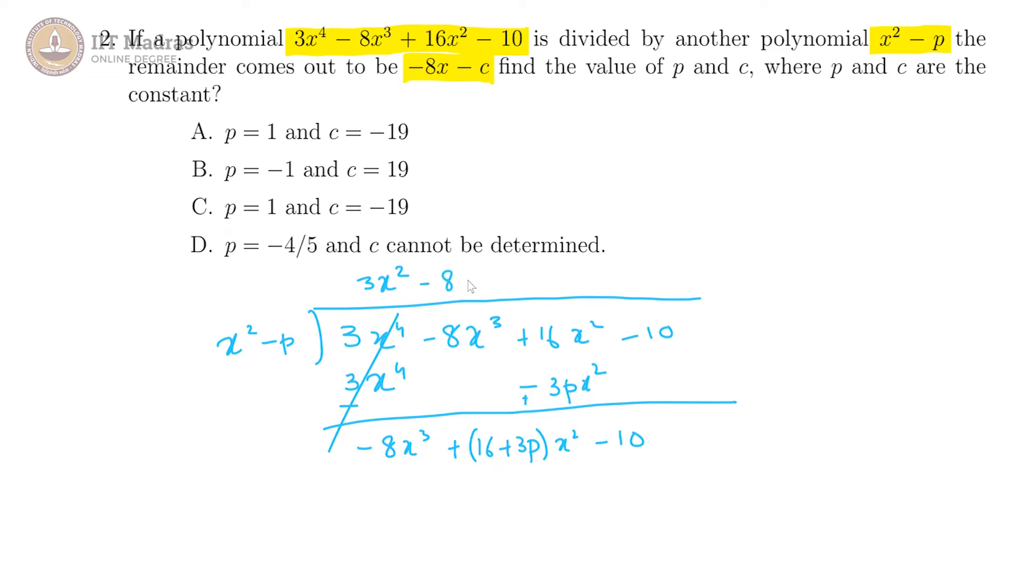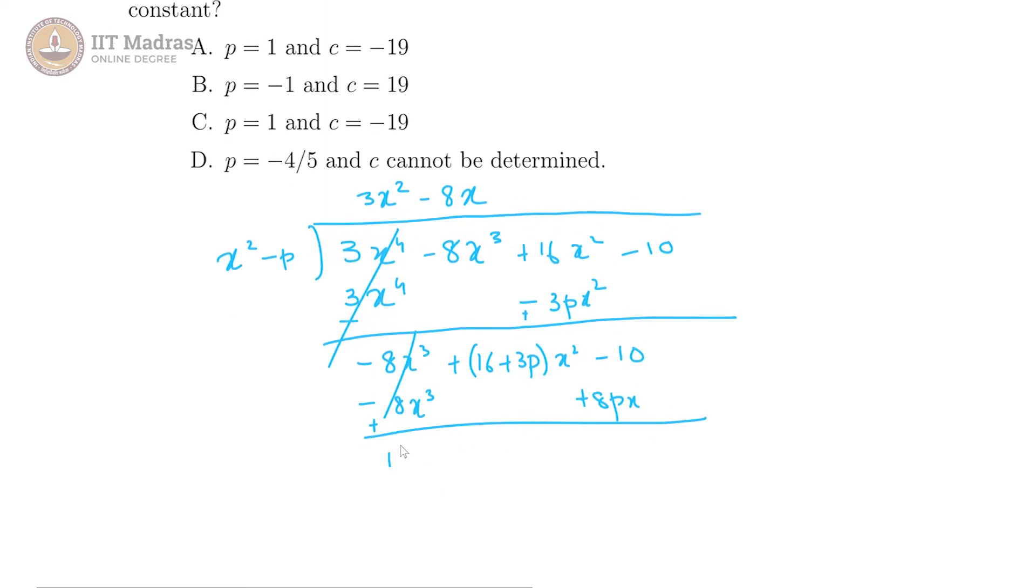Now we have minus 8x coming up here, which gives us minus 8x cube plus 8px. Plus 8px, and this goes off again. So we have 16 plus 3p x square minus 8px, and this goes off again, so minus 10.